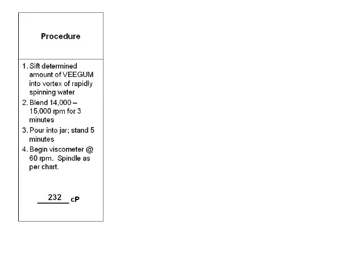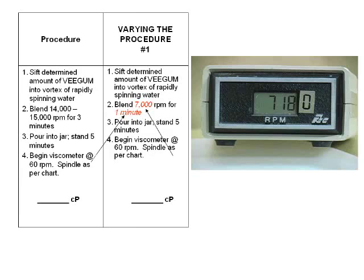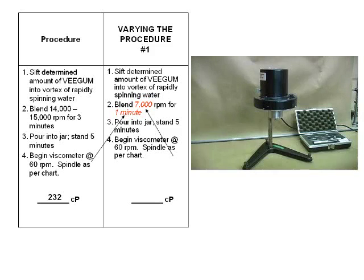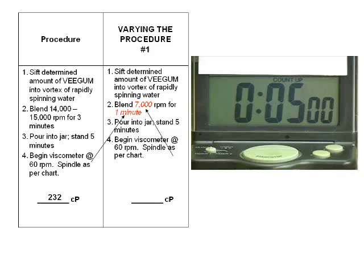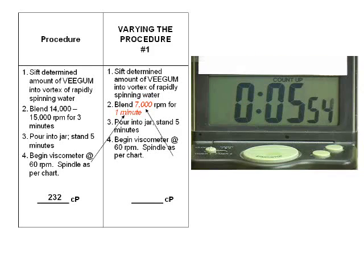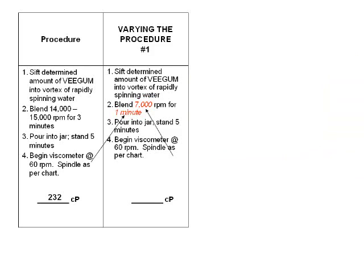Here again is the correct procedure. The final viscosity reading was 232 centipoise. Let's make a variation from the first procedure: we will reduce the speed to 7,000 RPM, and instead of blending for 3 minutes, we will blend for 1. The rest of the procedure will remain the same, whereby we allow the sample to stand at the viscometer for 5 minutes, then begin the viscometer and take a reading at 6 minutes. The result of varying the procedure as we did was 50 centipoise, much lower than the result from performing the procedure as written.